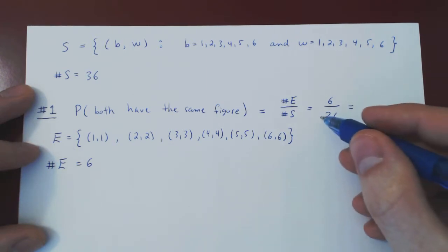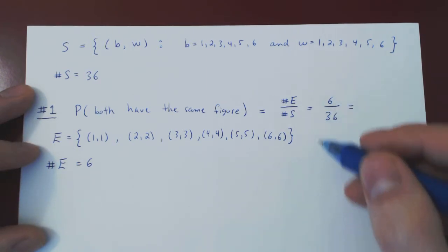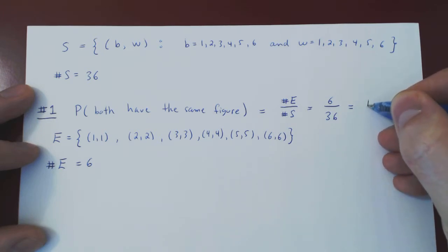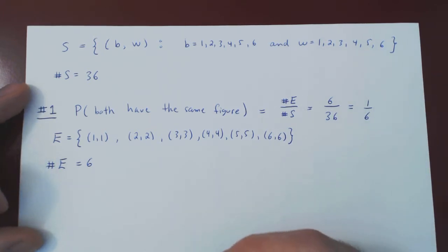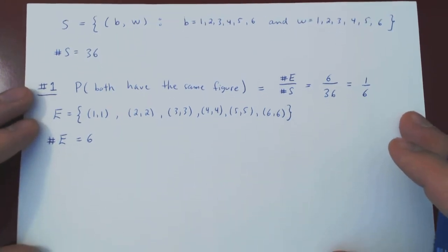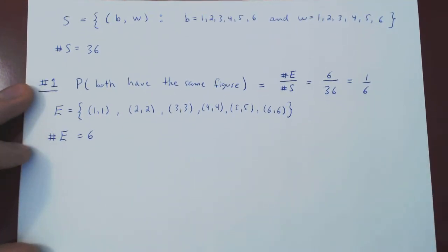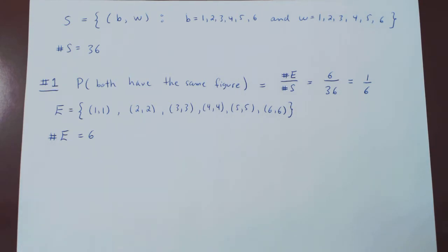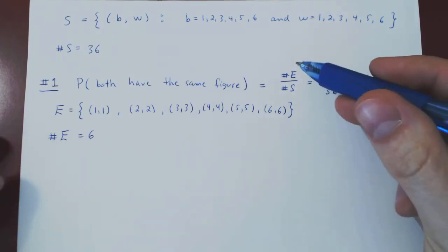We can simplify as 36 as 6 times 6, we can cancel one of the sixes, and we're left with 1 out of 6. So if you roll two dice and you ask what is the probability that both dies come up with the same figure, the answer is 1 out of 6. Straightforward counting problem.